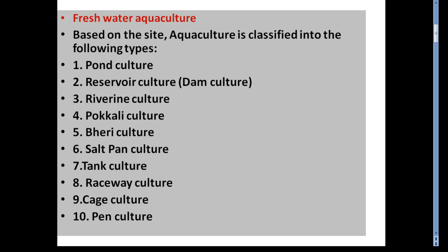Based on the site, aquaculture is classified into the following types: pond culture, reservoir culture, riverine culture, pokkali culture, berry culture, saltpan culture, tank culture, raceway culture, cage culture, and pen culture.